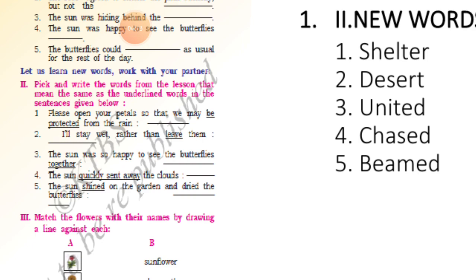The answer for second is desert. Third: 'the sun was so happy to see the butterflies together' — 'together' in the book is written as united. These are synonyms — same meaning words. Don't get confused; they are given in their own words, and you have to find the same meaning word from the passage. Fourth: 'the sun quickly sent away the clouds' — 'chased.' 'The sun shined on the garden' — 'shined' is beamed.